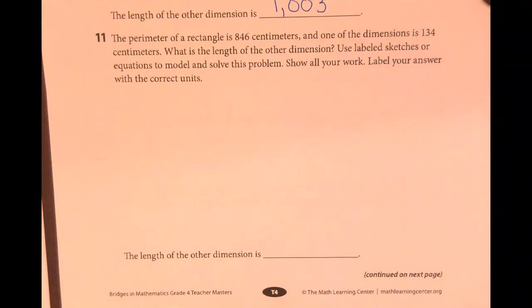The perimeter of a rectangle is 846 centimeters, and one of the dimensions is 134 centimeters. What is the length of the other dimension?